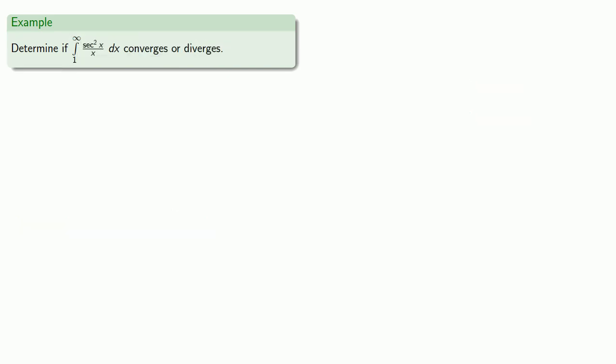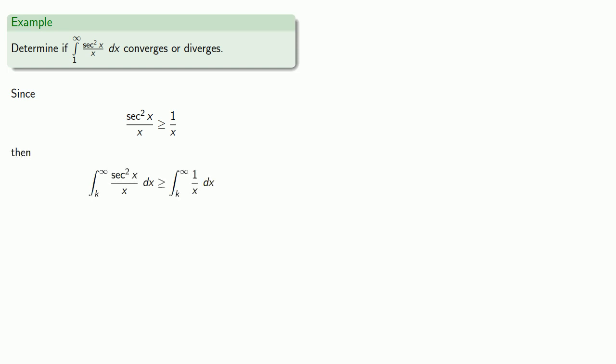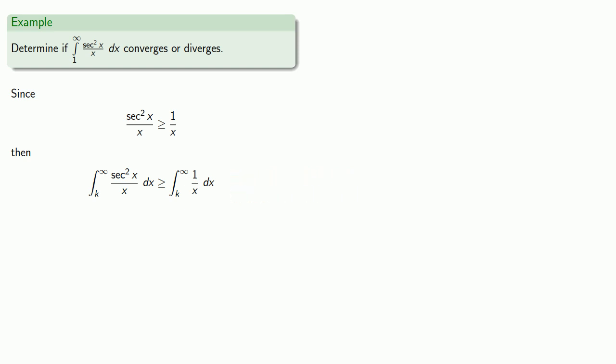As another example, let's consider the integral from 1 to infinity of sec²(x) / x. Again, we need a suitable comparison function, and here the problem is the secant function. Since secant is 1 over cosine, we know that sec²(x) = 1/cos²(x), and so sec²(x) is always going to be greater than or equal to 1. So sec²(x) / x is always going to be greater than or equal to 1/x. Therefore the integral from k to infinity of sec²(x)/x is going to be greater than or equal to the integral from k to infinity of 1/x. But the integral from k to infinity of 1/x diverges, and so does our integral.